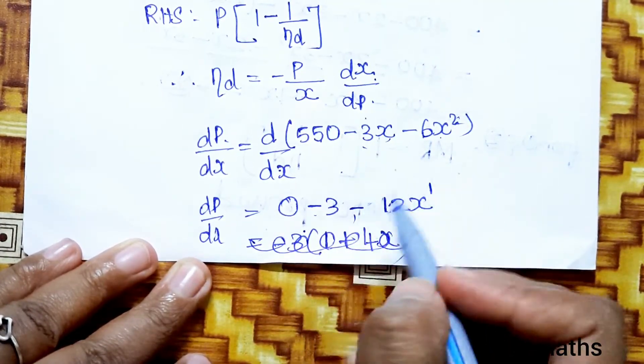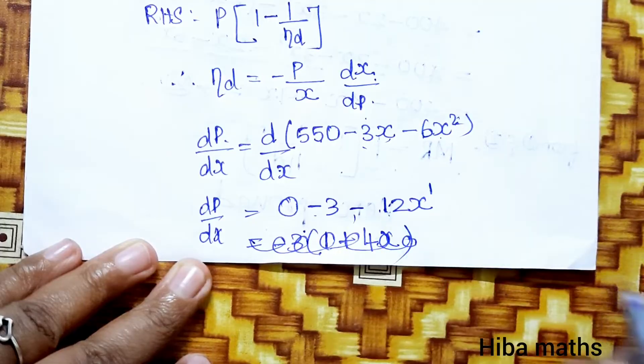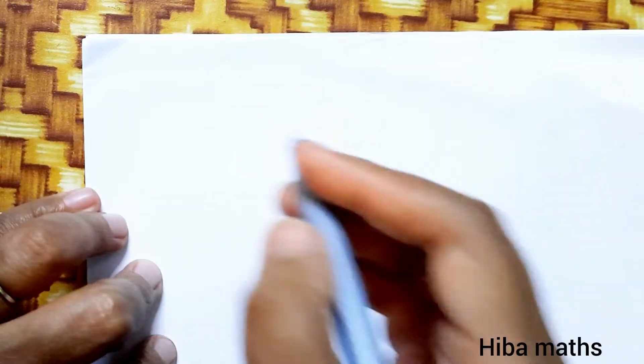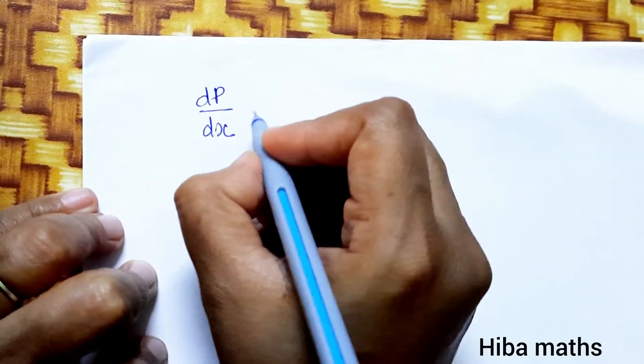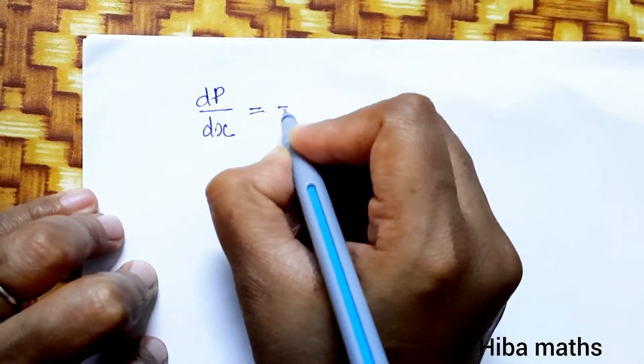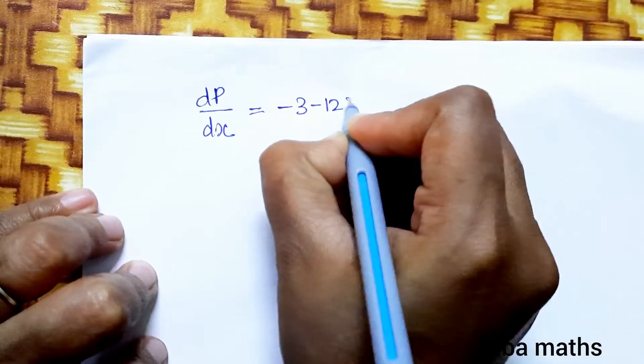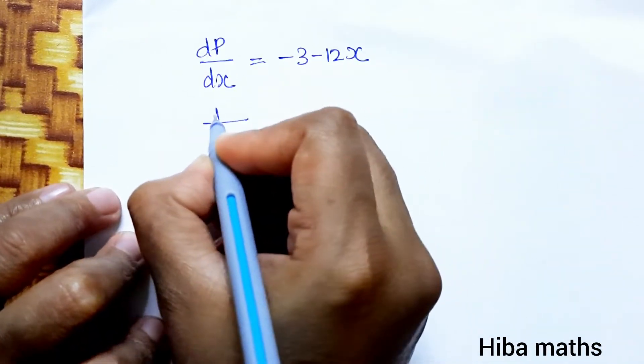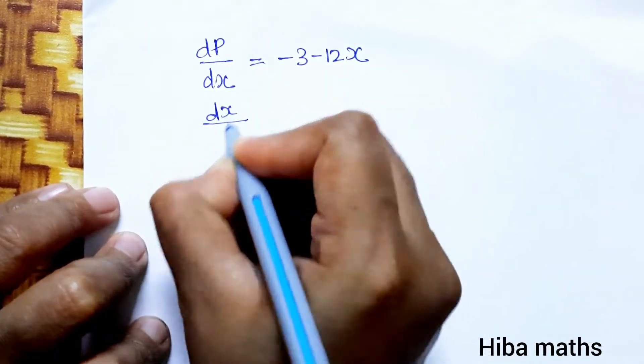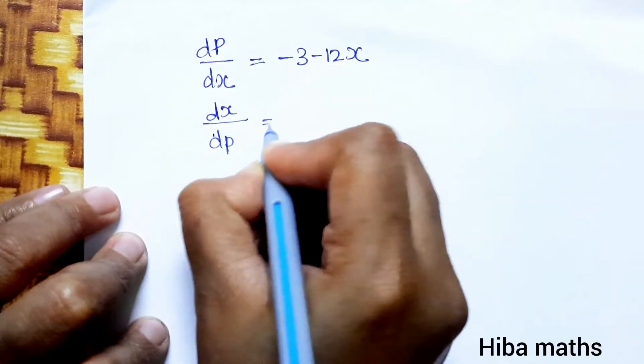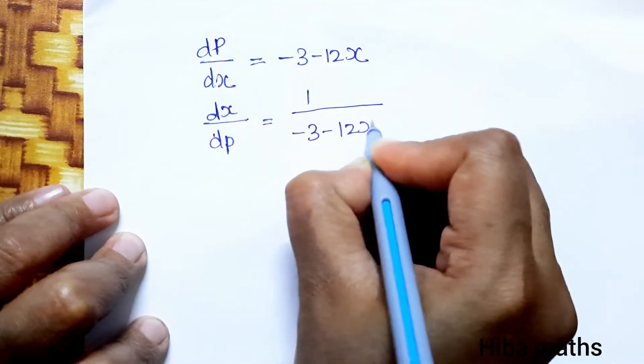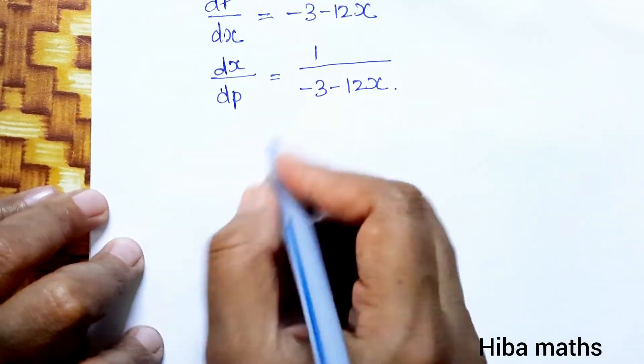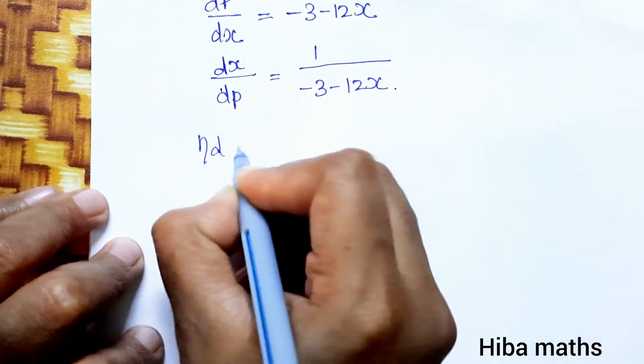This is dP by dx. But we need dx by dP. So dx by dP equals 1 by dP by dx, which is 1 by minus 3 minus 12x.